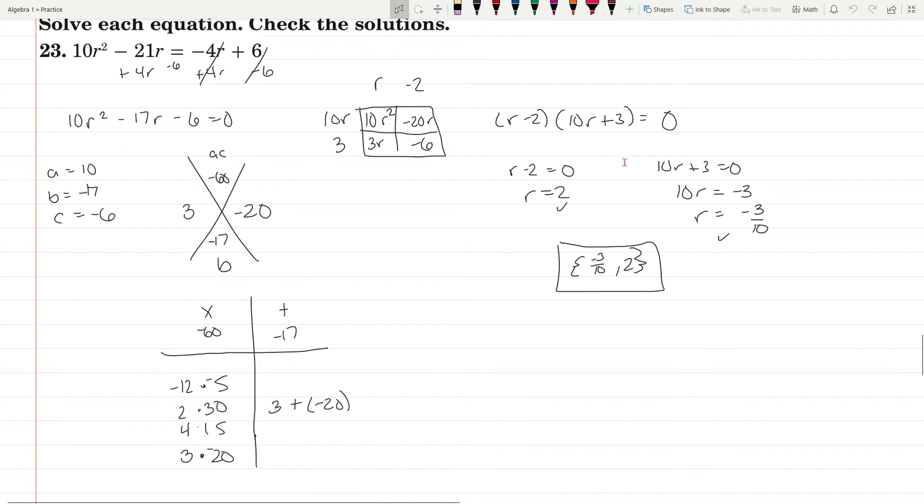So you have r minus 2, 10r plus 3. Set them equal to 0. r minus 2 equals 0, add the 2, you get r equals 2. This one's a little more tricky, but subtract the 3 and divide by 10. You get negative 3 tenths and 2.